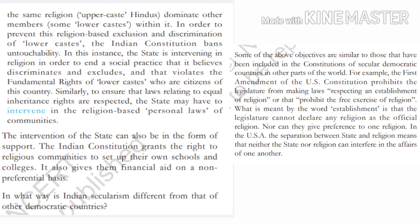Some of the above objectives are similar to those that have been included in the constitution of secular democratic countries in other parts of the world. For example, the First Amendment of the U.S. Constitution prohibits the legislature from making laws respecting an establishment of religion or that prohibit the free exercise of religion. What is meant by the word 'establishment' is that the legislature cannot declare any religion as the official religion, nor can they give preference to one religion. In the USA, the separation between state and religion means that neither the state nor religion can interfere in the affairs of the other.